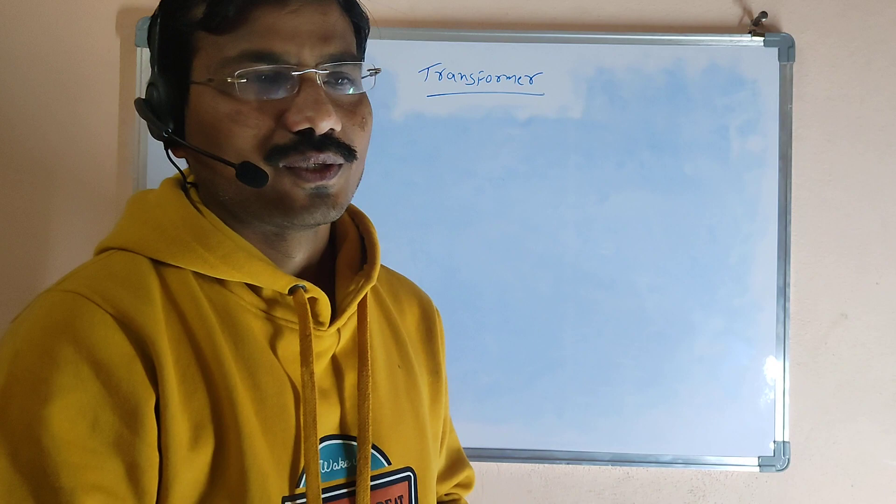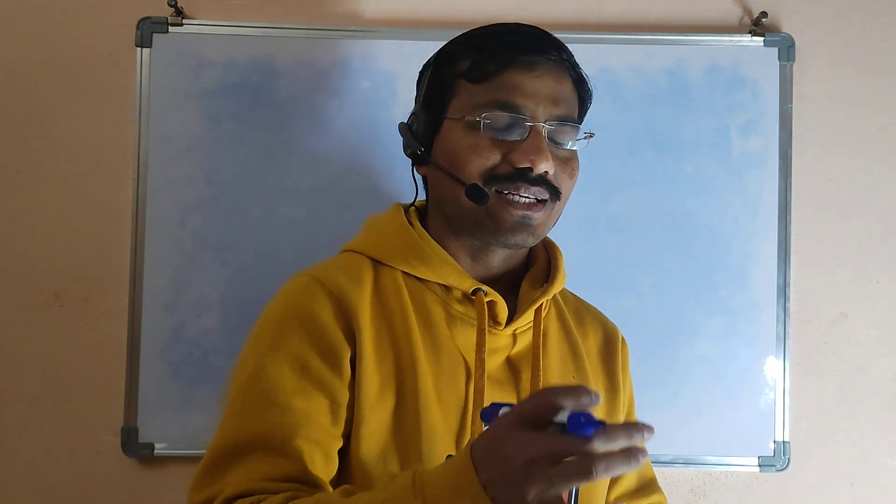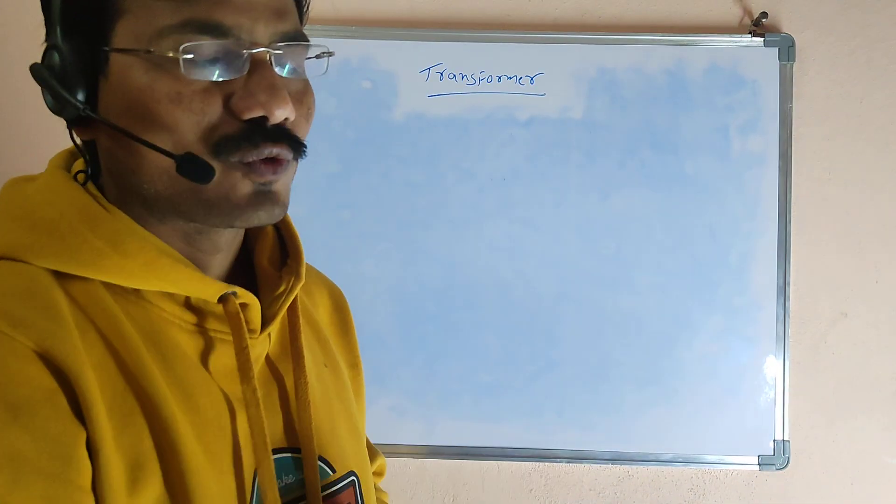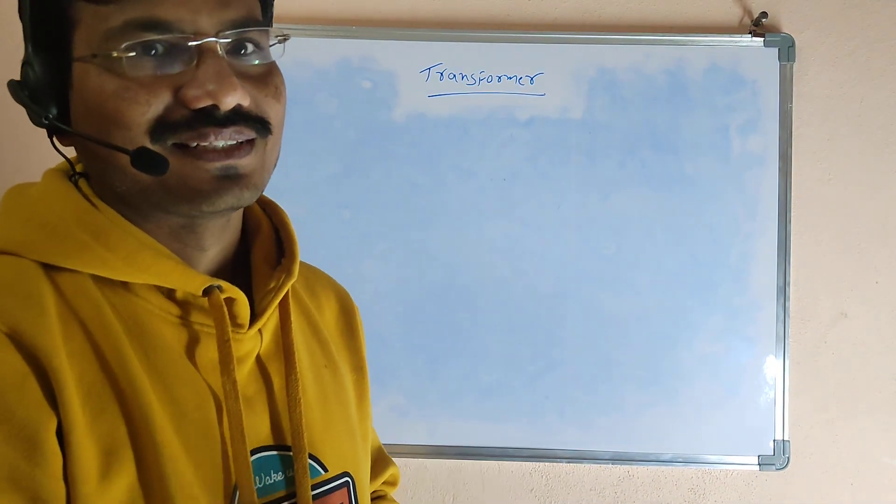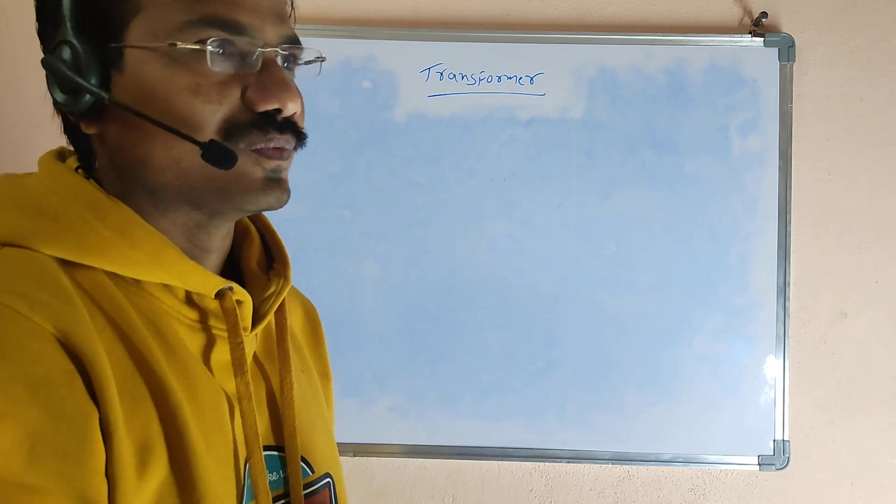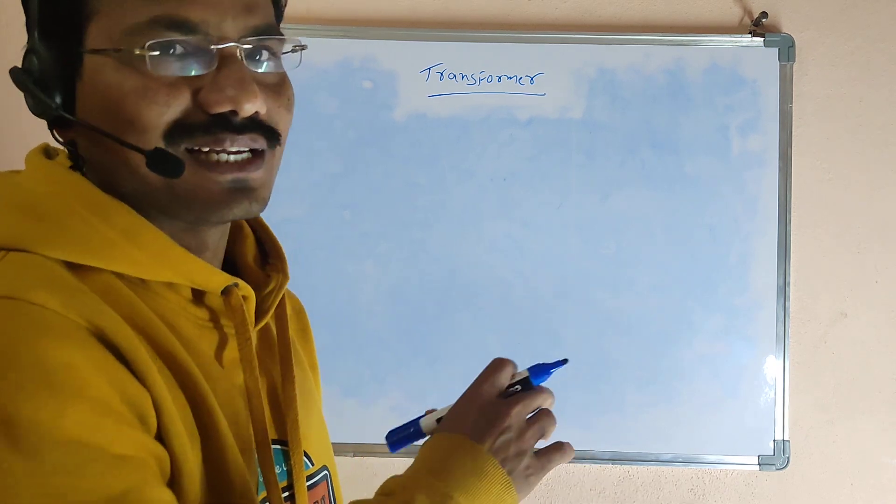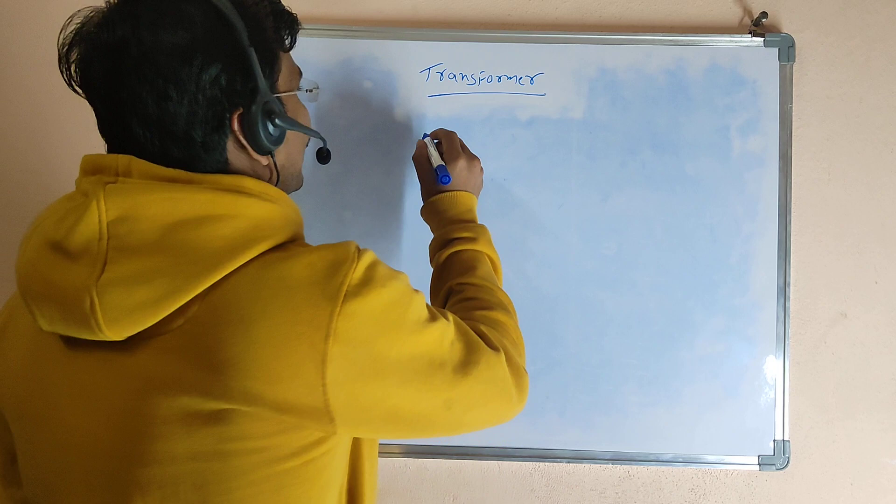Hello, today we are discussing one more concept: the transformer nameplate. The vector group is DYn11. I am explaining how the vector group is DYn11.